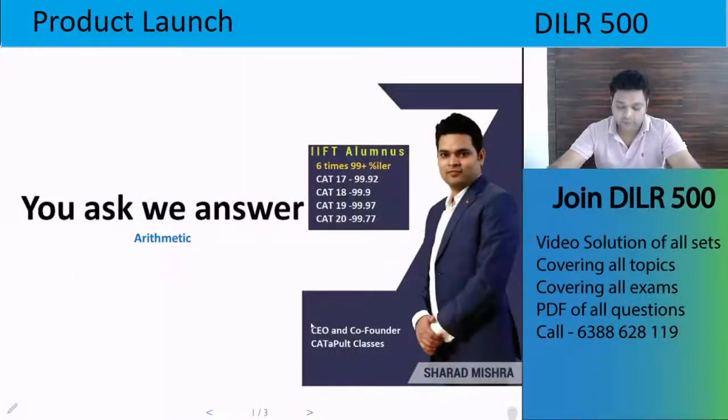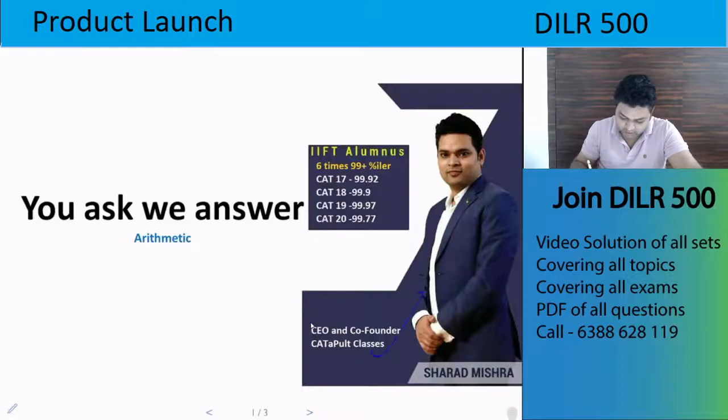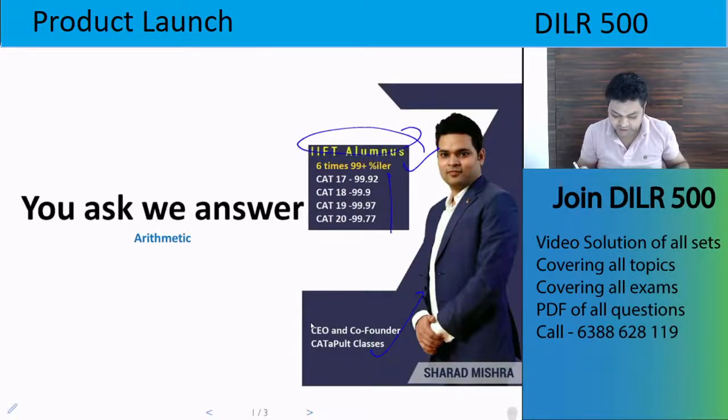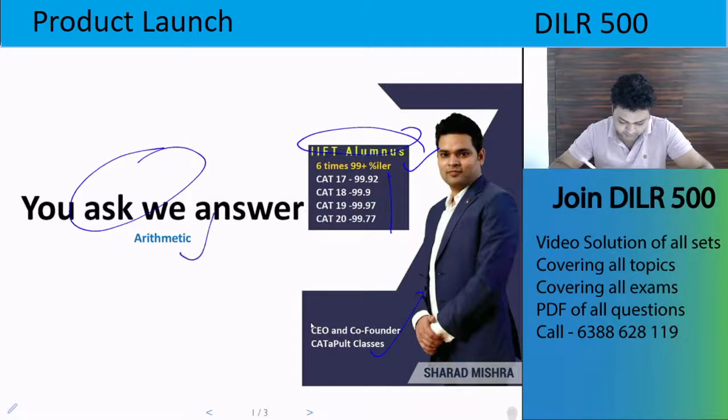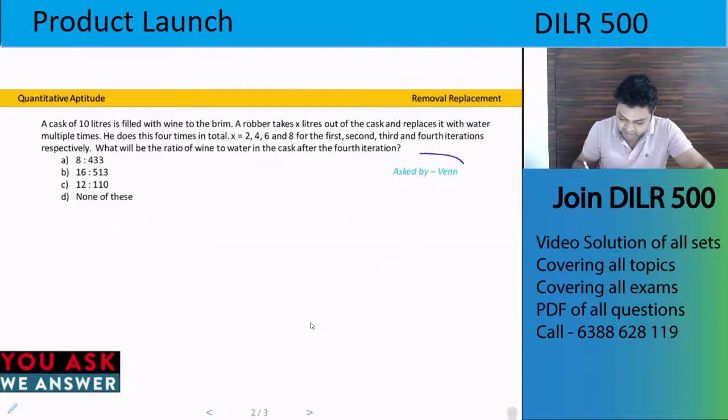Hello everyone, my name is Sharad and I am CEO and co-founder of Catapult Classes, pass out of IIT Delhi. Six times 99 plus percentile, these are my CAT percentiles. I am going to answer a question under the series You Ask We Answer. This question is of arithmetic and asked by a viewer. This question is about removal and replacement.